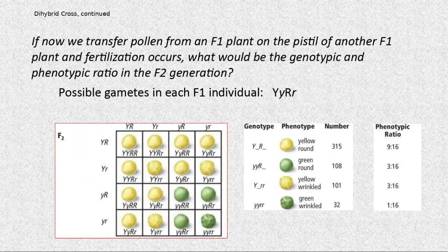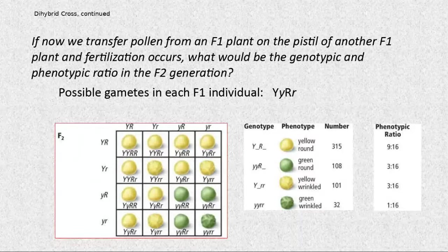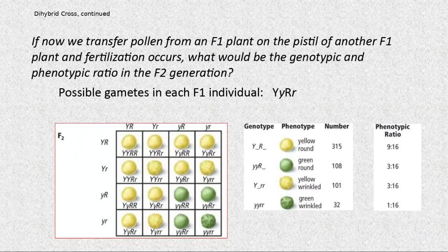Yellow and wrinkled is three over 16. Green and wrinkled I have only one over 16. So this is my dihybrid ratio obtained with two traits — the classic 9:3:3:1 ratio.